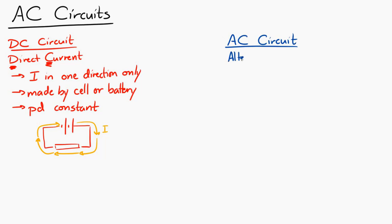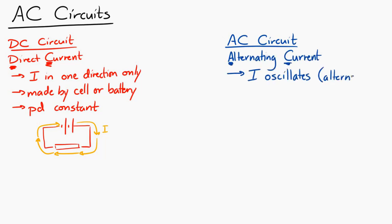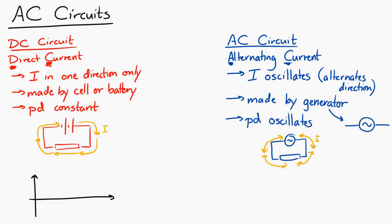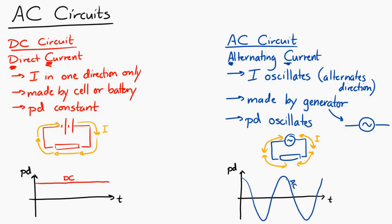When we talk about AC circuits, or alternating current circuits, the current is going to oscillate. It's going to alternate from one direction to the other, and it's produced by a generator given this symbol — a circle with a wiggly line in it. The potential difference across the generator also oscillates. We can represent this in a graph: the potential difference from a DC circuit is constant, while from an AC circuit it oscillates, going up and down from positive to zero to negative to zero to positive.